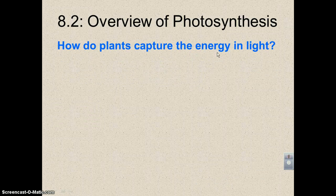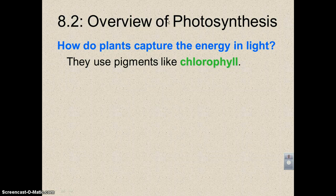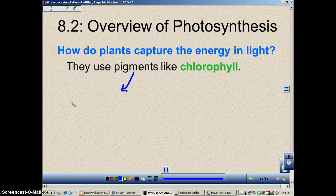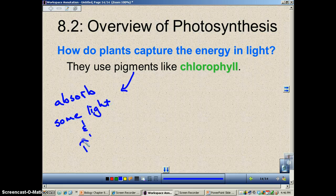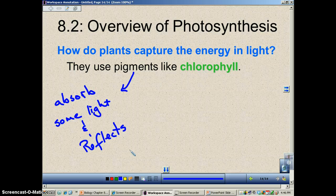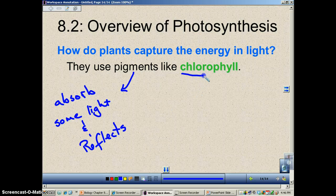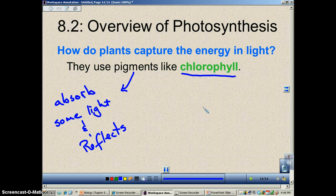How do plants capture the energy in sunlight? They're going to use a pigment. A pigment is a substance that will absorb some wavelengths of light and reflect others. Certain pigments will absorb all the other colors of light but reflect others. Chlorophyll, for example, will absorb all the colors in the rainbow with the exception of green — the green reflects, and that's how we interpret chlorophyll as being green.